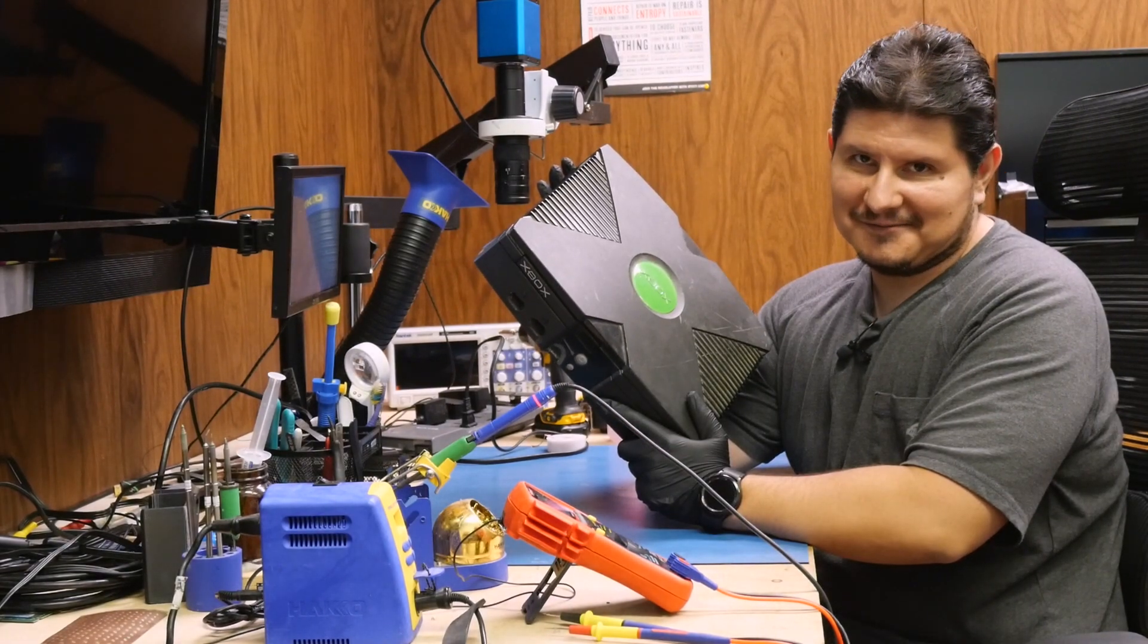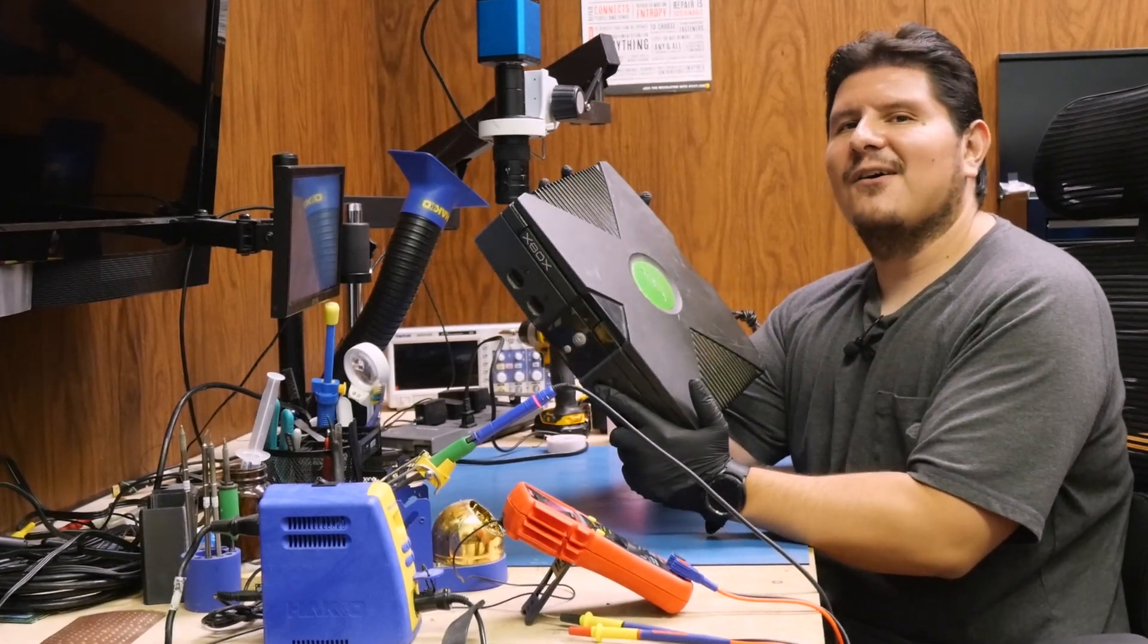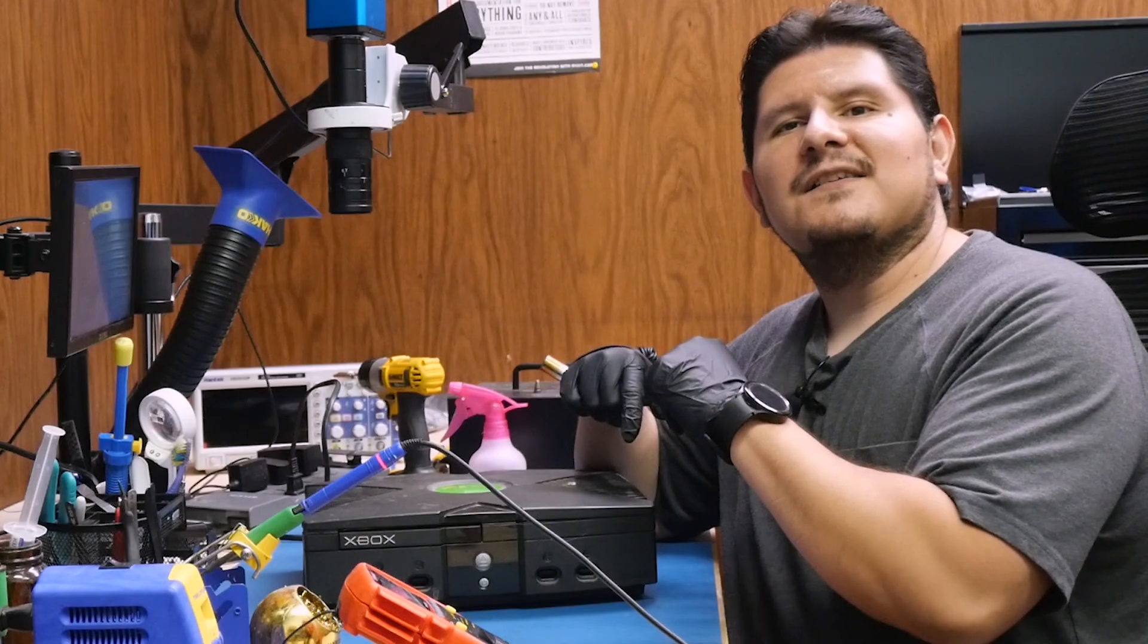If you press the eject button, that'll turn it off. You can also wiggle it around and it'll turn off and act all weird on you. So we're going to open up the console and see what's going on.